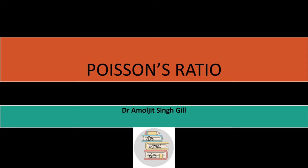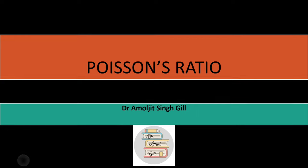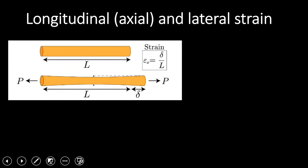We are aware about the term strain. Related to strain, there is another term called Poisson's ratio. When we talk about strain, we know that it is change in length divided by original length, but there are two components: longitudinal strain and lateral strain.